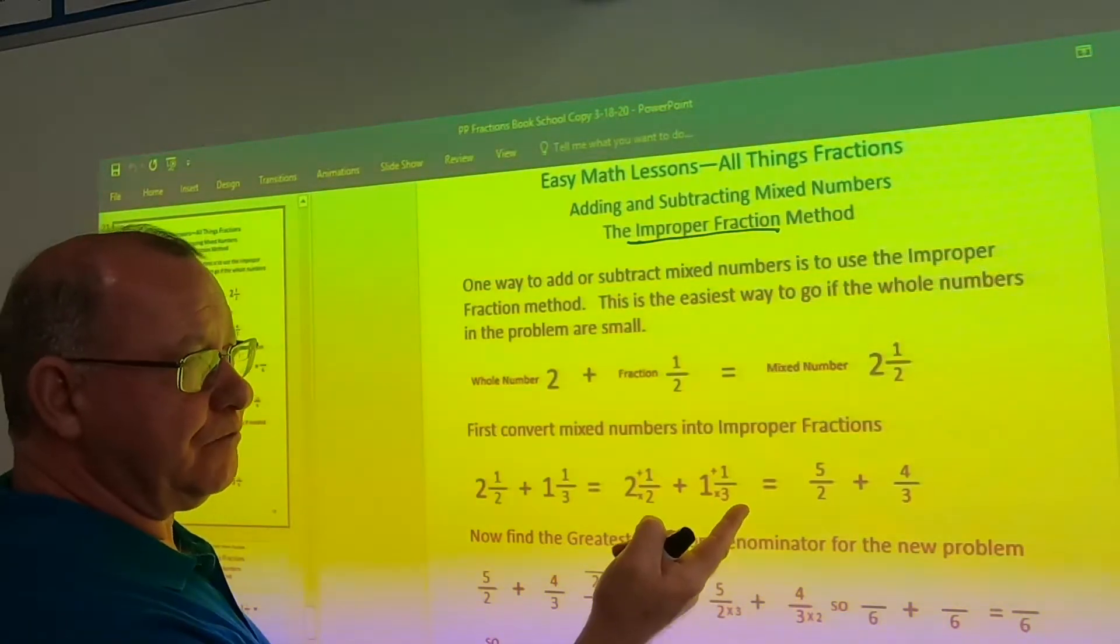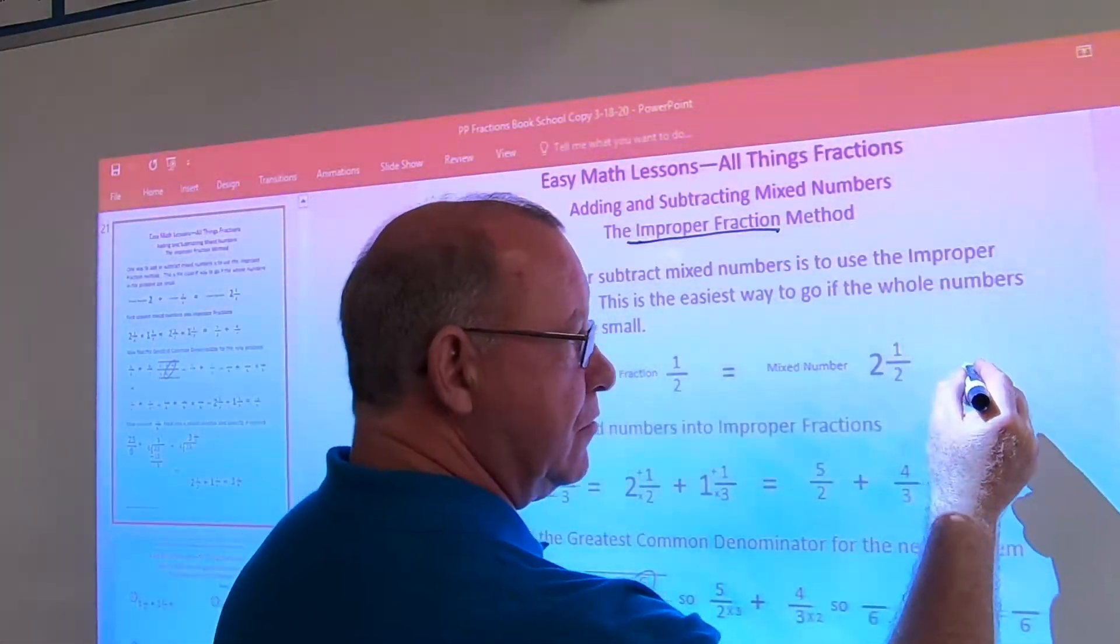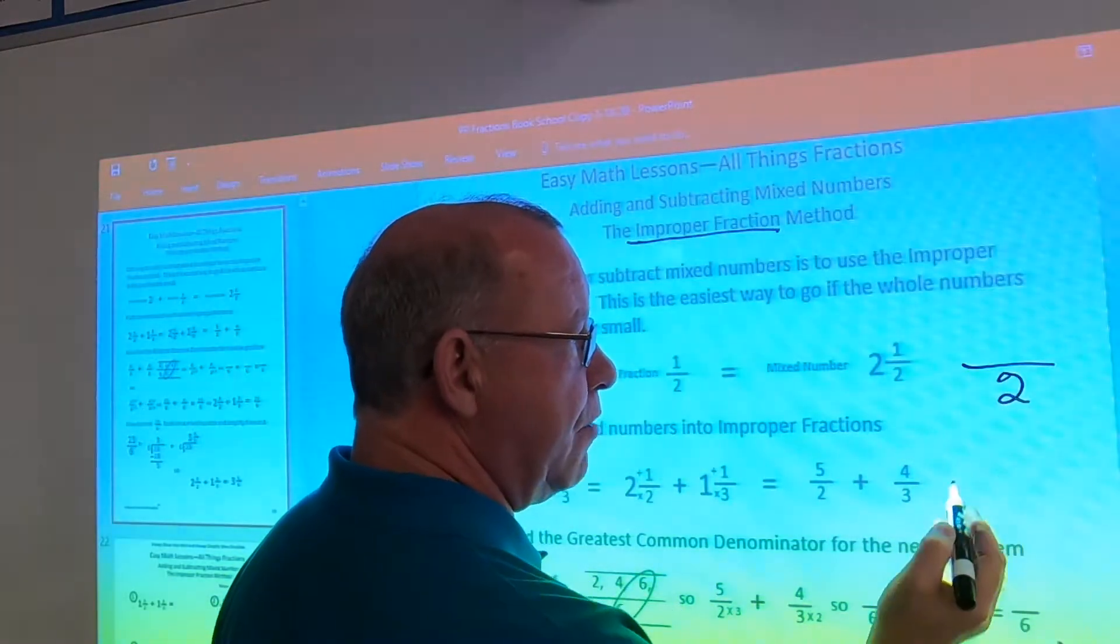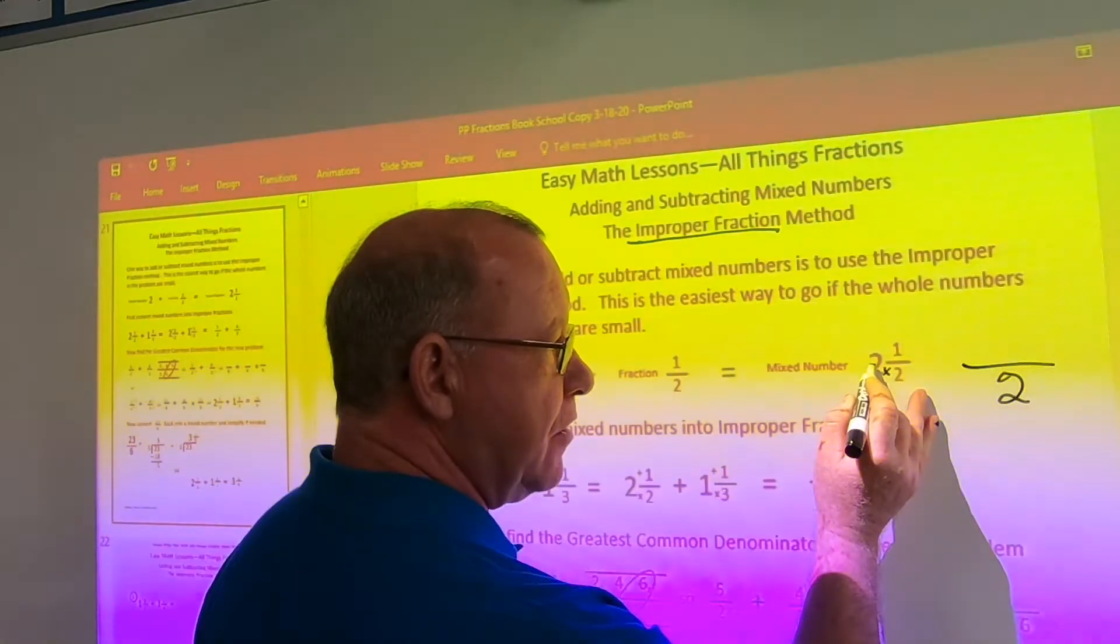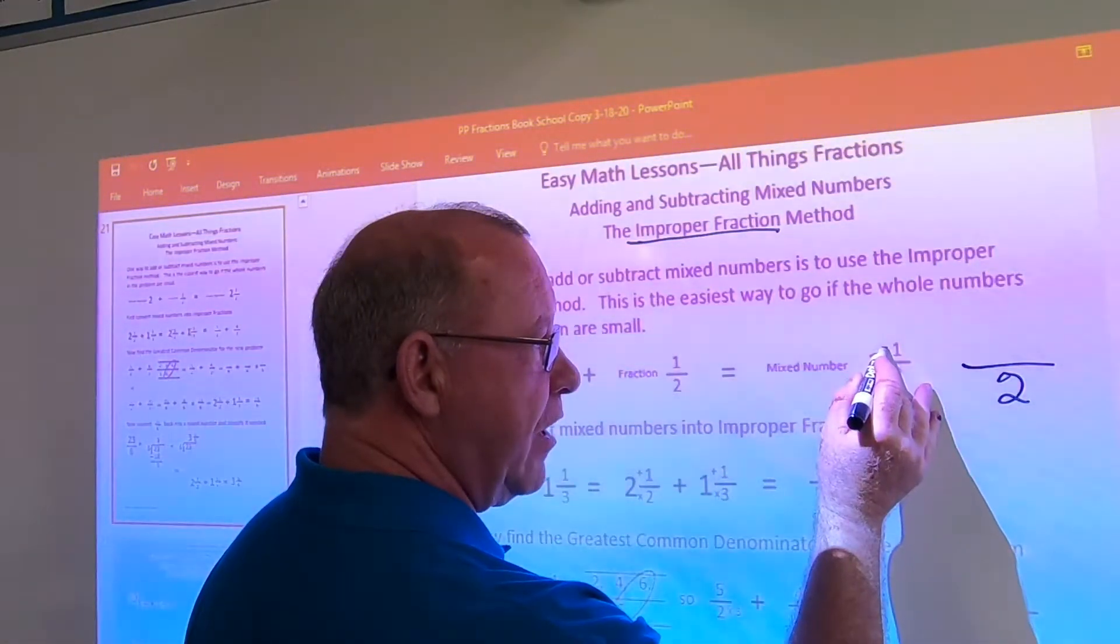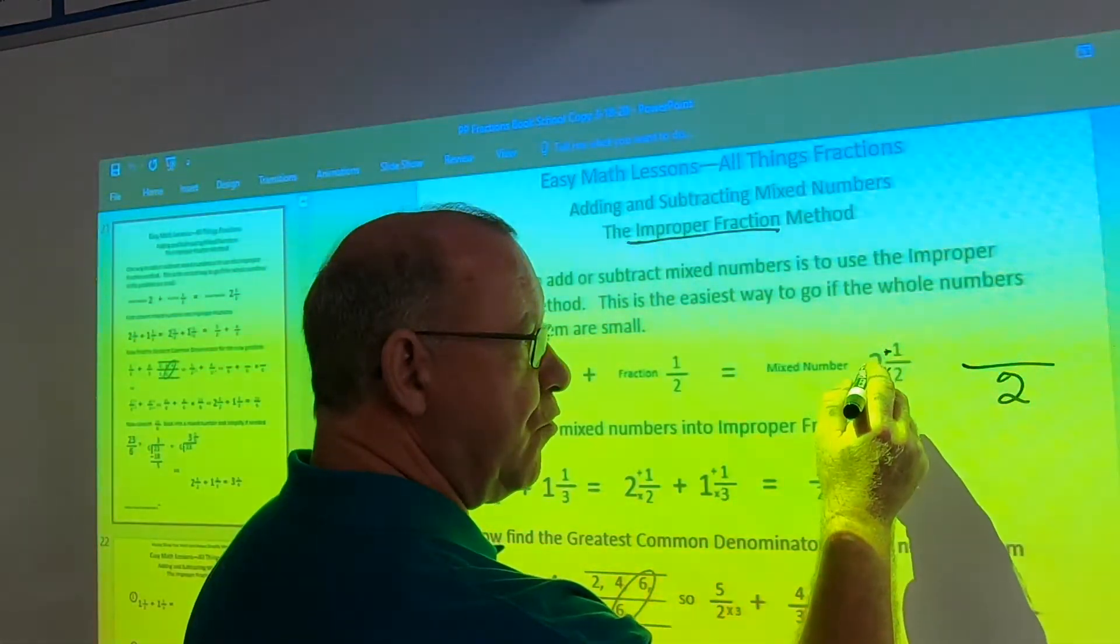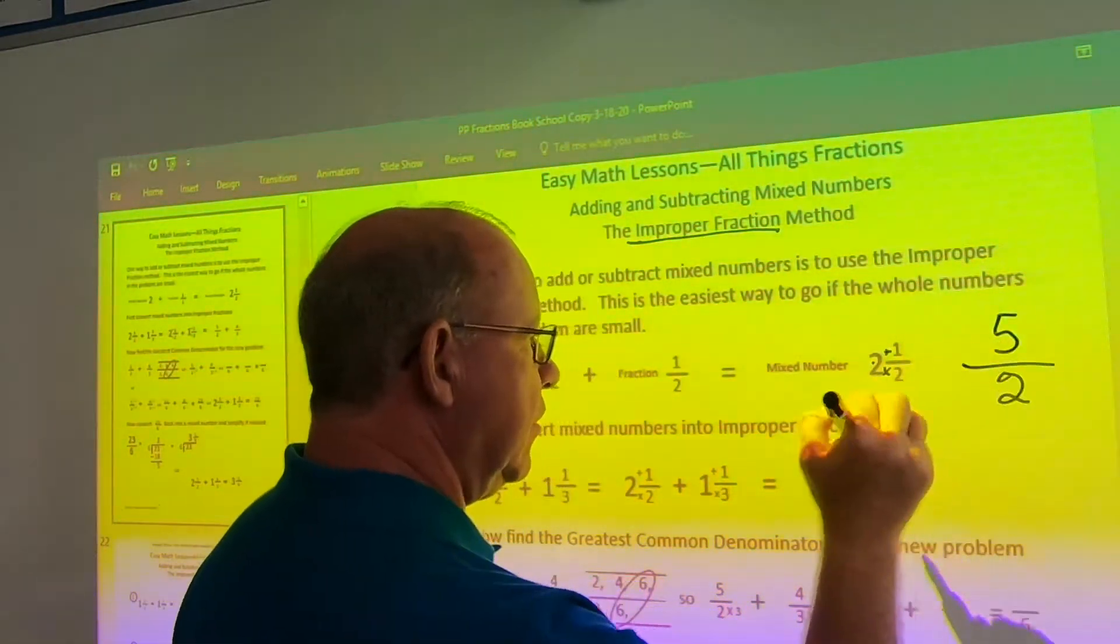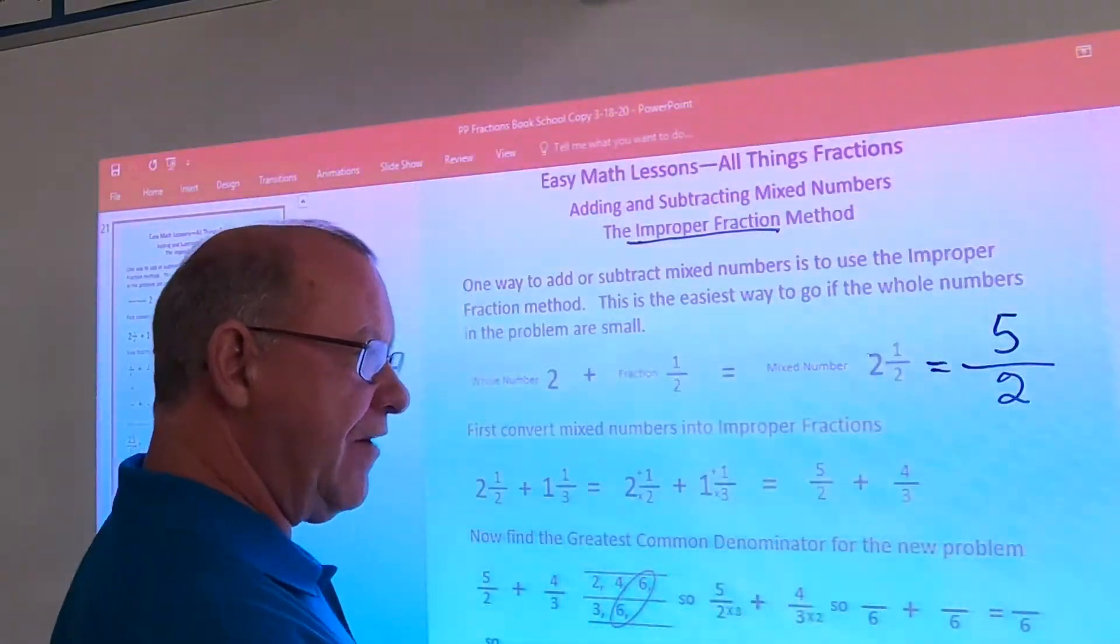To turn this into an improper fraction, I would use my rule, put my denominator on the bottom, multiply two times the whole number two gives me four, add that numerator, which is one. So, two times two is four plus one is five. Two and one half is equal to five halves.